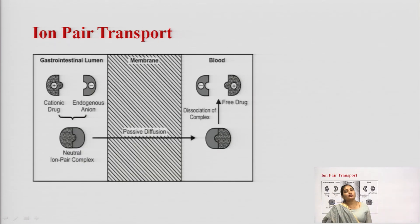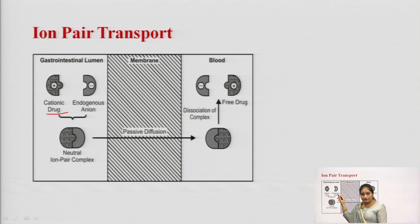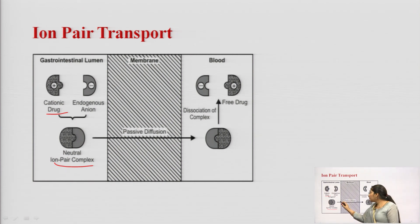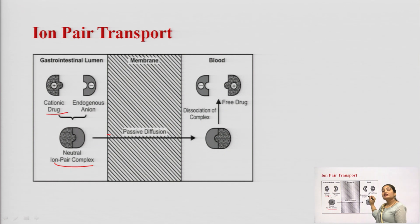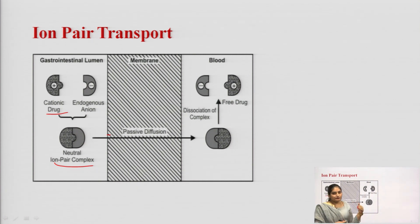In the diagram showing ion pair transport, in the gastrointestinal lumen the drug is present in cationic form. This cationic drug binds with an endogenous anion, forming a neutral ion pair complex. This complex is then transported by passive diffusion across the membrane, and upon reaching the blood it dissociates into the endogenous anion and the free drug.